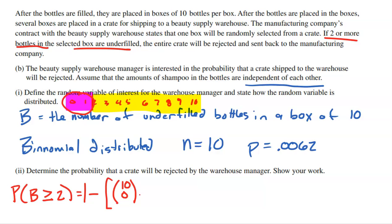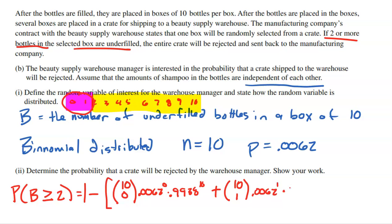Using the binomial formula: P(B=0) = C(10,0)·(0.0062)⁰·(0.9938)¹⁰, and P(B=1) = C(10,1)·(0.0062)¹·(0.9938)⁹. If one bottle is underfilled, the other nine are not. Subtracting zero and one underfilled from 1 gives us the probability of two or more, which is what causes rejection.